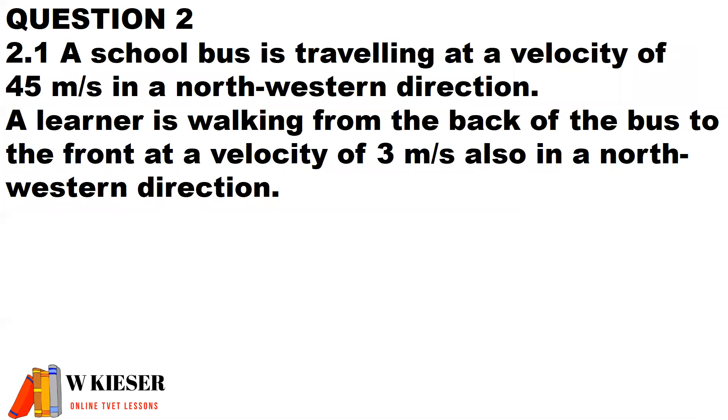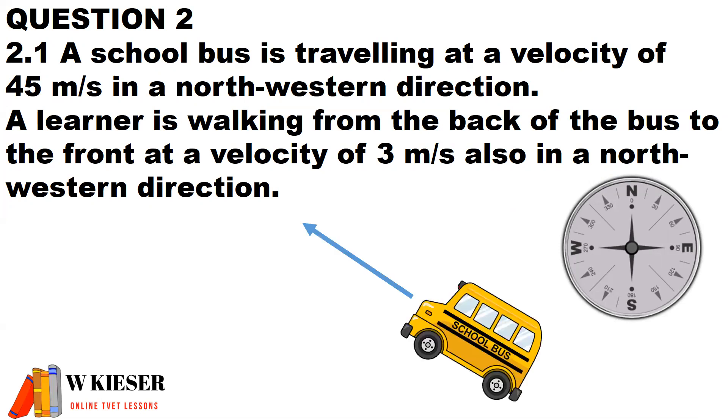In question 2.1, a school bus is traveling at a velocity of 45 meters per second in a northwestern direction. A learner is walking from the back of the bus to the front at a velocity of 3 meters per second, also in a northwestern direction. We need our compass headings of north, east, south, and west. The bus is traveling at 45 meters per second, and the learner is traveling at 3 meters per second. Because they're in the same direction, we can add them together. Therefore, we have a total of 48 meters per second.